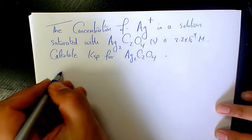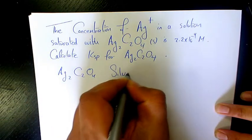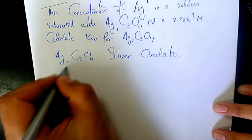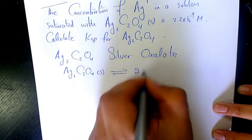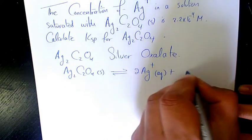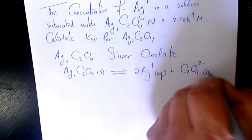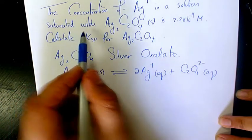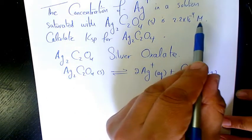First of all, Ag2C2O4 is silver oxalate, and when it dissolves it's going to produce 2 ions of silver aqueous phase plus oxalate ion. The concentration is 2.2 times 10 to the power of negative 4 molar.